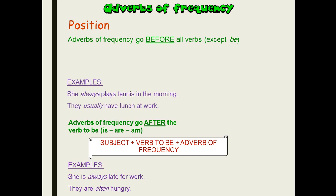She always plays. Because 'plays' is the main verb, so it comes before it — before the main verb. She always plays tennis in the morning. They usually have lunch at work. 'Usually have' — 'have' here is the main verb, that's why we added 'usually' before the main verb.